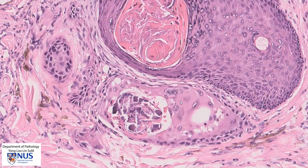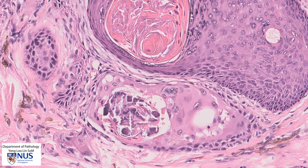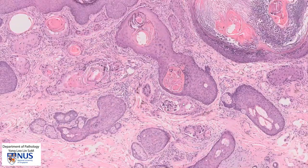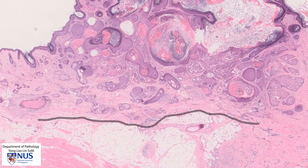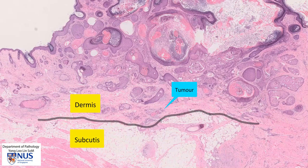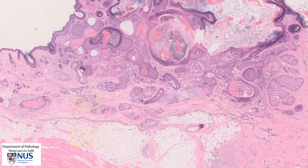Looking at some of these nests of tumor cells, we can see that there is quite significant nuclear enlargement and pleomorphism. We can also see that the tumor extends right into the deep dermis, and it doesn't infiltrate into the subcutis in this particular section.